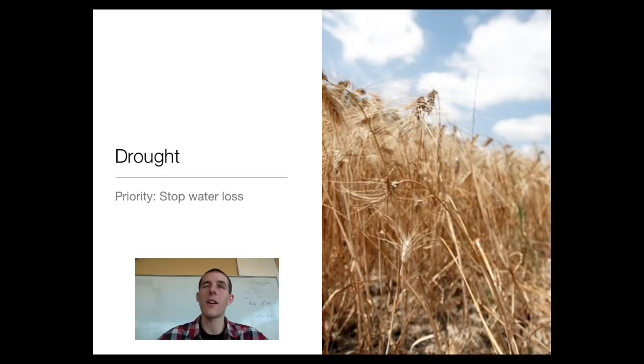Once the stomata closes, that reduces the amount of water that is being lost by the plants. It's one of the reasons that plants will, yes, they will because they've lost turgor pressure, but kind of a secondary effect is that their rate of transpiration goes down. Also, some plants, when they wilt, they will curl up to reduce the surface area of their leaf. That is also a response to try to stop the loss of water.